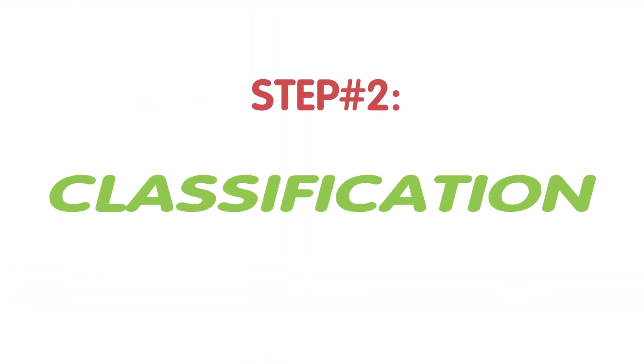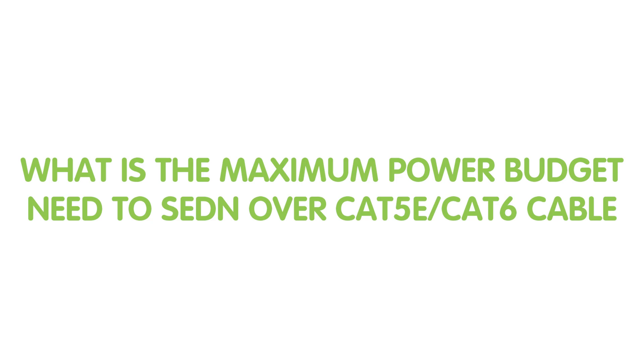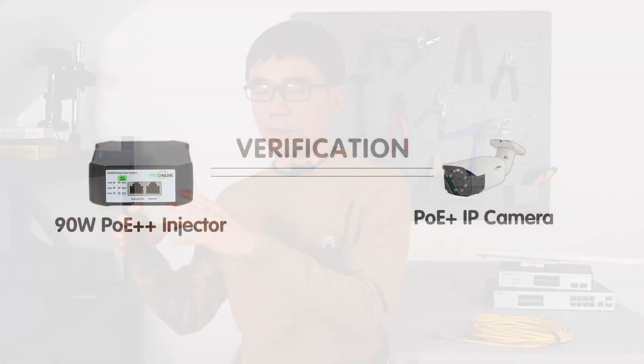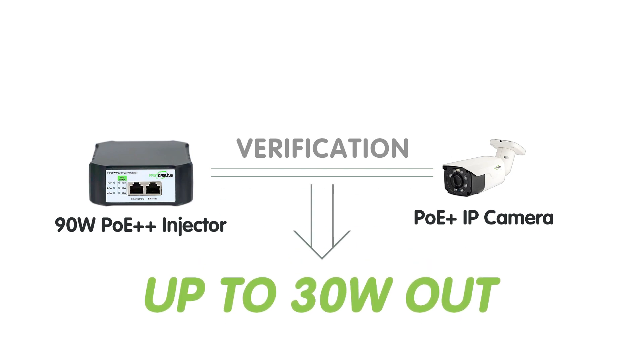The second step is classification. The PoE injector and PoE switch will classify your edge device and determine the maximum power budget to send over the Cat5e or Cat6 Ethernet cable. For example, if you connect a PoE Plus IP camera to a 90W PoE injector or switch, it will recognize the edge device only supports PoE Plus and will set the maximum power budget to 30W.